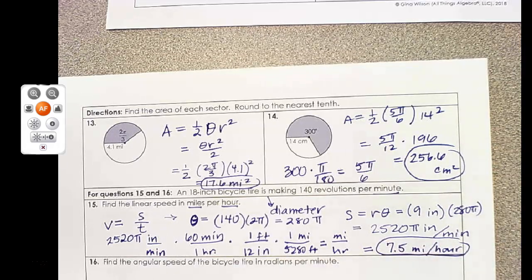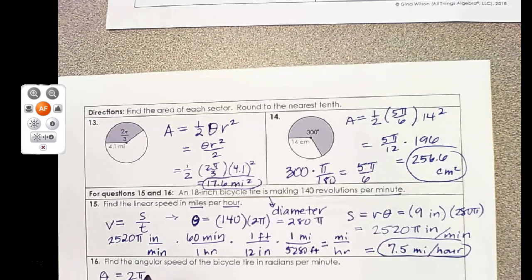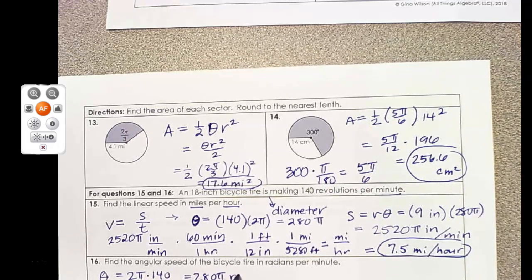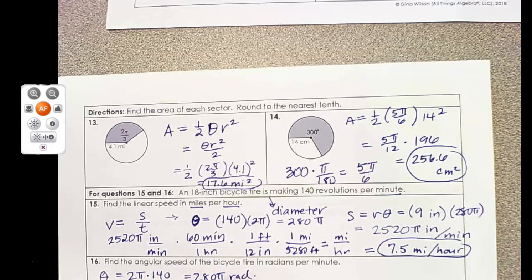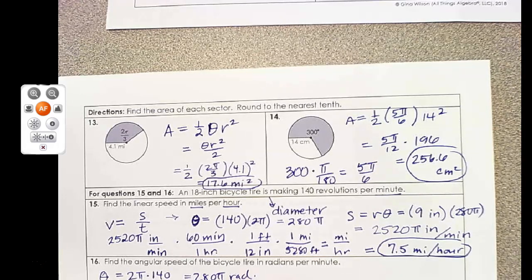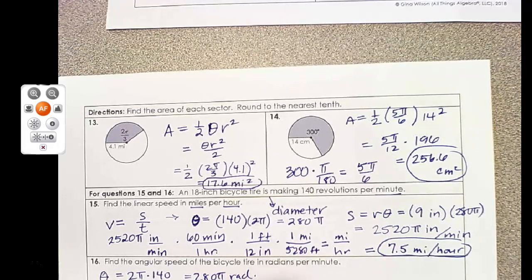Number 16, we're going to find θ again, 2π times 140, 280π radians. Our ω is 280π radians over 1 minute. So the angular speed is 879.6 radians per minute.